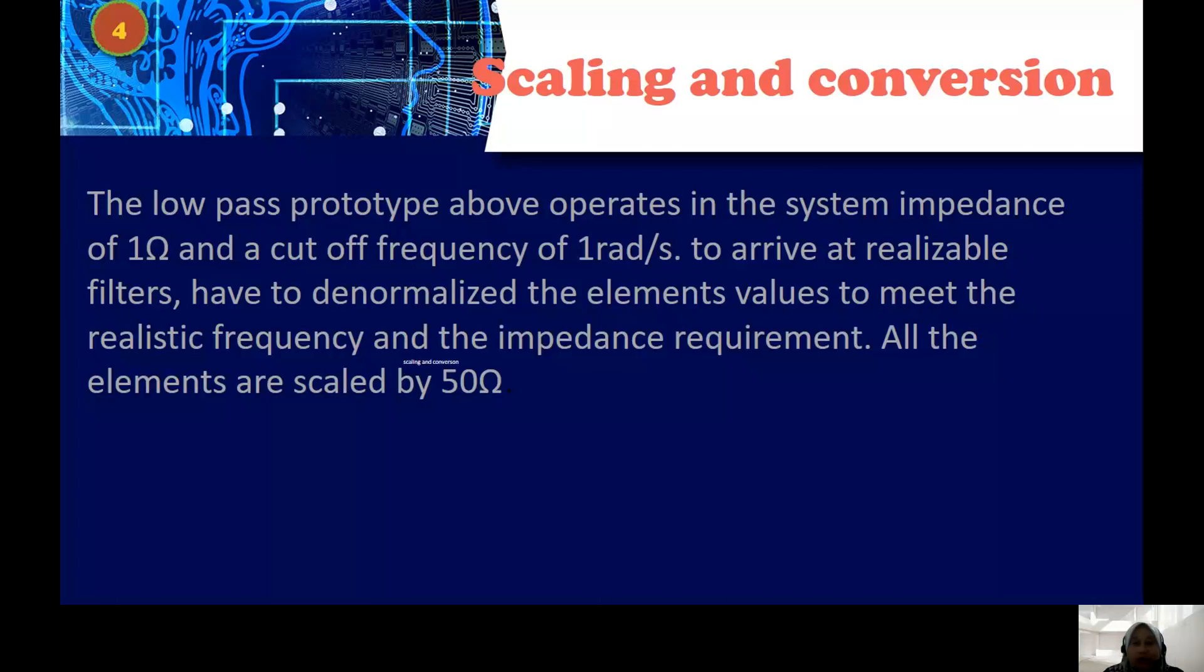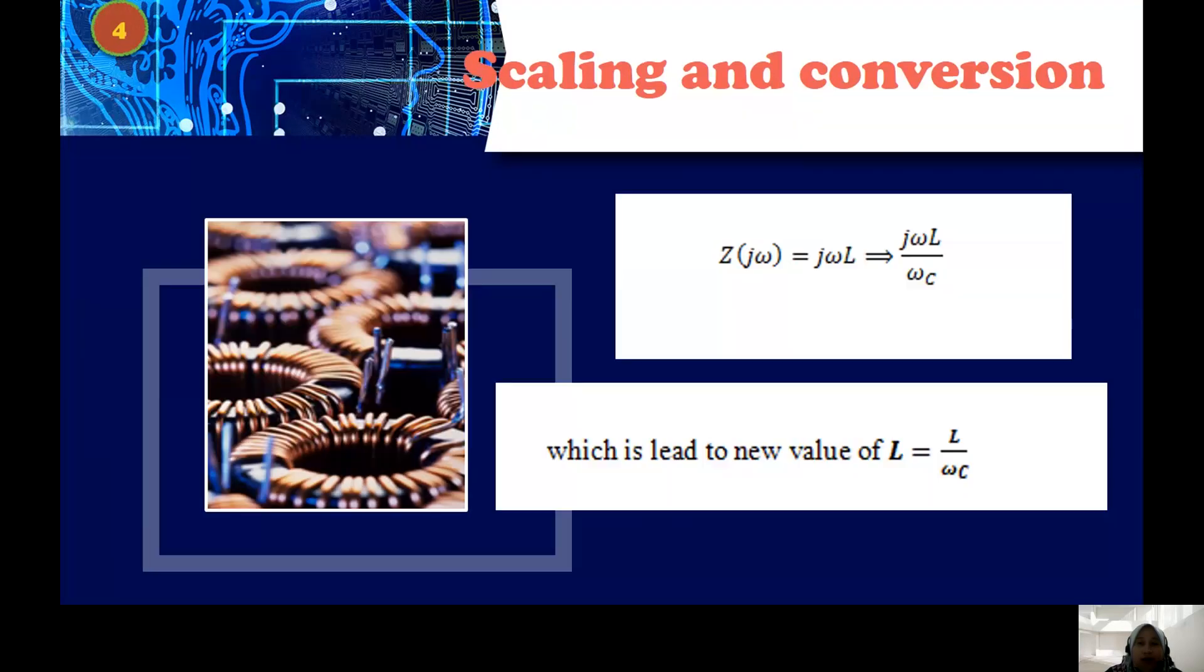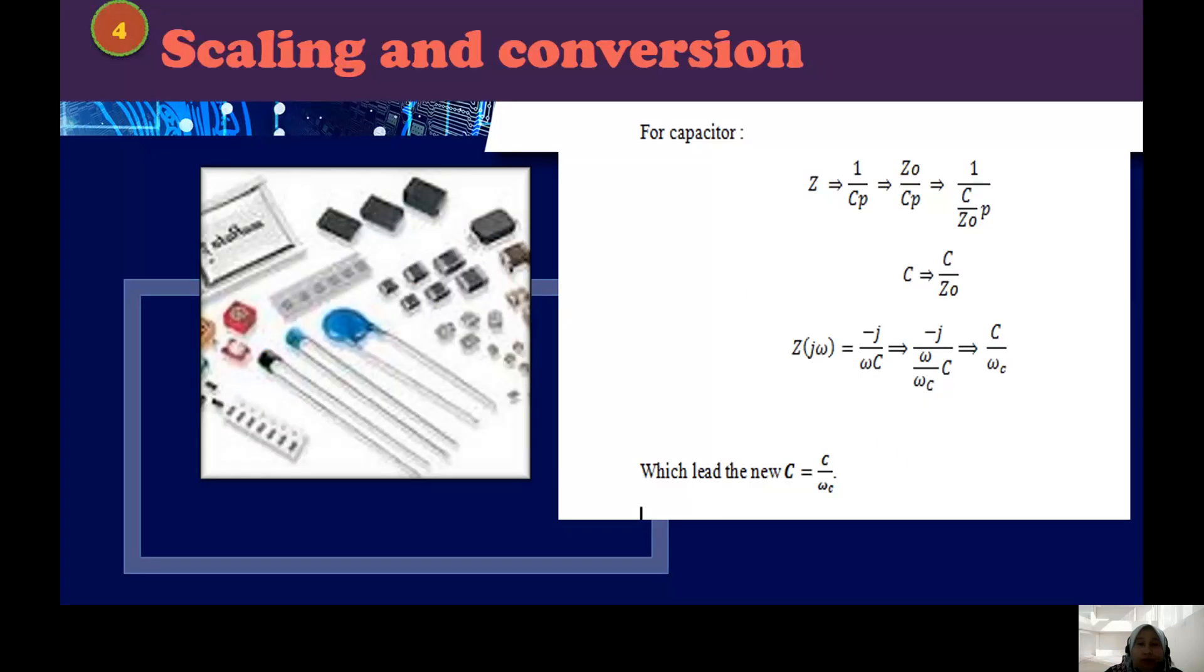This elaborates the scaling and conversion of a low-pass prototype to the real value that meets the realistic frequency and impedance requirements. For the inductance, you have to use this equation that multiplied by z-naught and it will lead to the new value of L, and this one will lead to the new value of C, which is the capacitor.